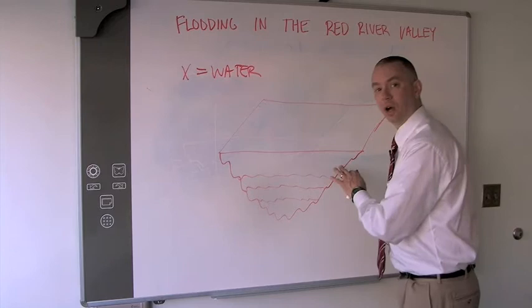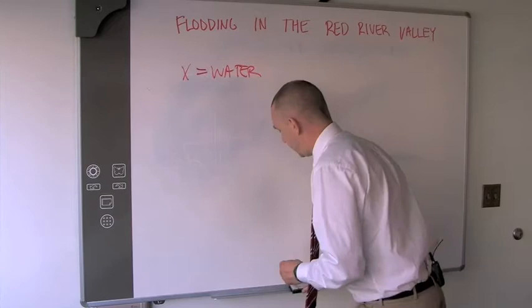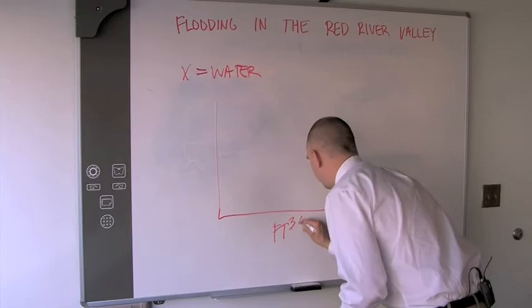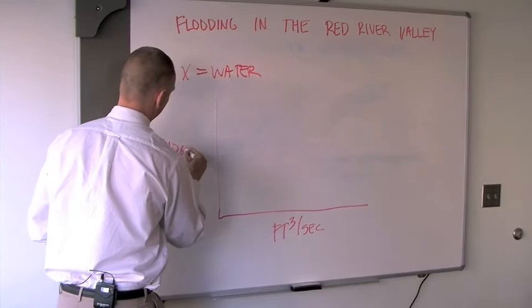Now they don't use badly drawn cartoon rivers to do the forecast though. They use what's called a rating curve. And this I can handle. It is a graph. Now what they will do is plot the cubic feet per second against the height of the river in feet.